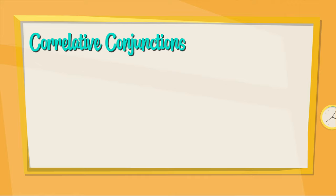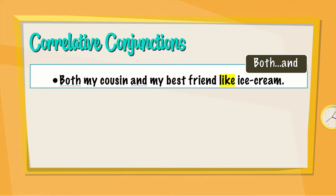Other correlative conjunctions: both and. Both my cousin and my best friend like ice cream. Notice the verb "like" — it is highlighted in yellow and it is using the plural form, because both my cousin and my best friend means two people, so plural — "like", not "likes".